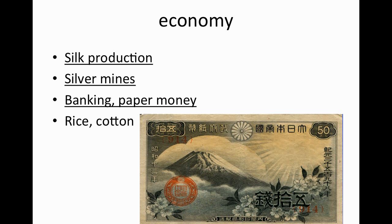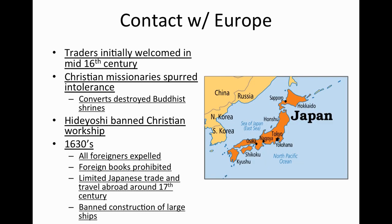Economically, silk was a major product and silver mines were very beneficial. Banking and paper money were also evident in Japan during this time, and rice and cotton were important agricultural products. But eventually — and this is important — Japan cut off all trade. Initially in the mid-1500s, around Columbus's time, trade was welcome. But Christian missionaries were disrespectful, and converts to Christianity destroyed Buddhist shrines. This led to bans: Hideyoshi banned Christian worship, and by the 1630s — much earlier than China — all foreigners were expelled.